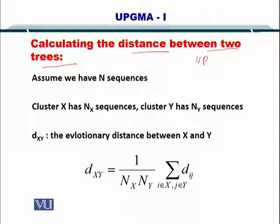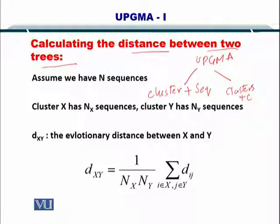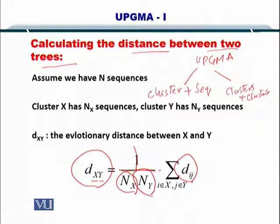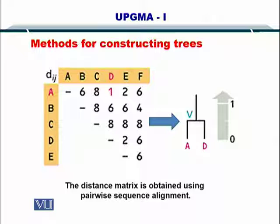Please remember that UPGMA has two components. In the first component, you cluster and add a sequence to it. In the second case, you add two clusters. The formula to compute the distance between cluster X and Y is the number of sequences in X multiplied by the number of sequences in Y — their reciprocal — multiplied by the distance of each element within I and J, such that I belongs to X and J belongs to Y. So if you remember, the distance between these sequences — let's say ACTG, GTCA, and so on — these sequences were pairwise sequence aligned and the distance was computed.